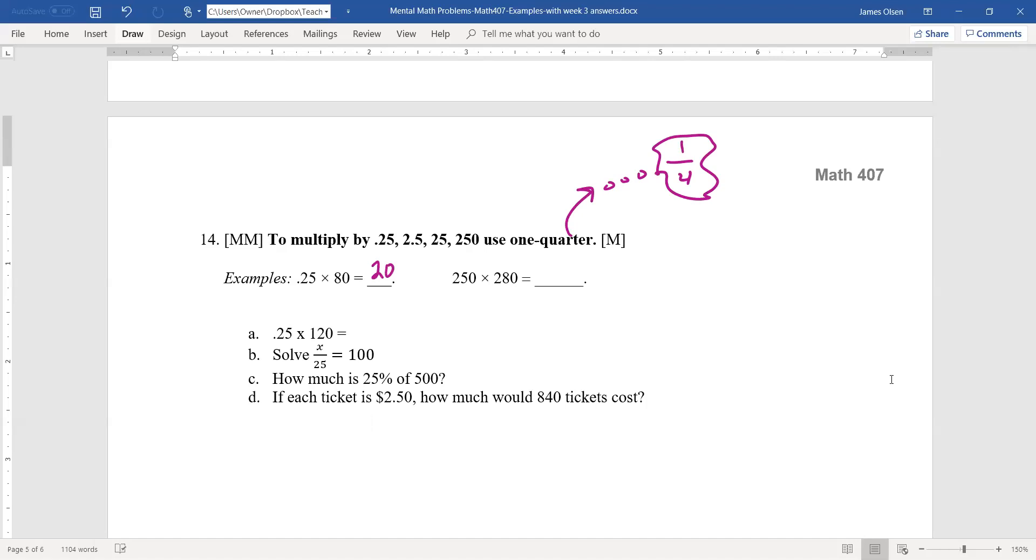But let's take a look at 250 times 280. Well, here's my 25, which means I can divide by four. 280 divided by 4 by front-end is 70.